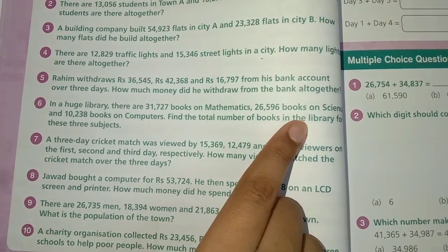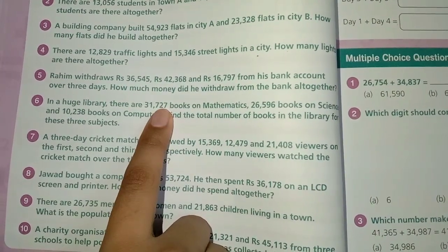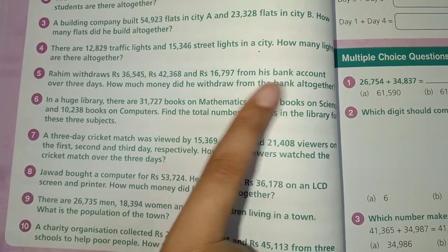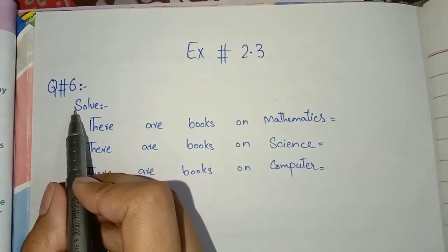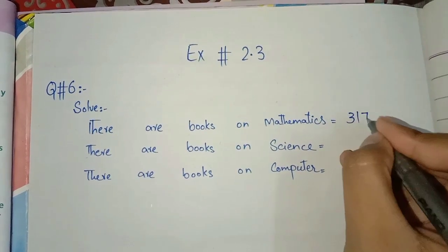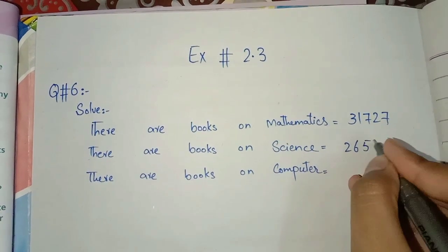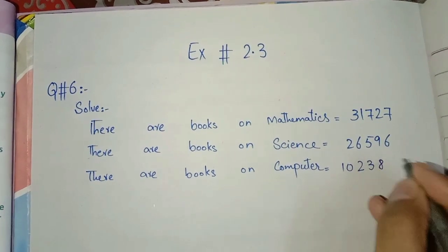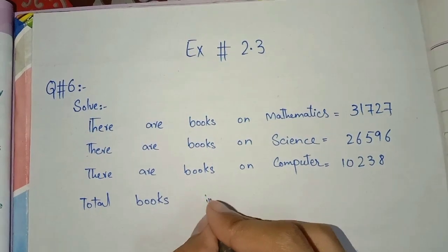Find the total number of books in the library for these three subjects. There is a library with books on mathematics, science, and computer. Science is 26,596, computer is 10,238. Total books in the library.